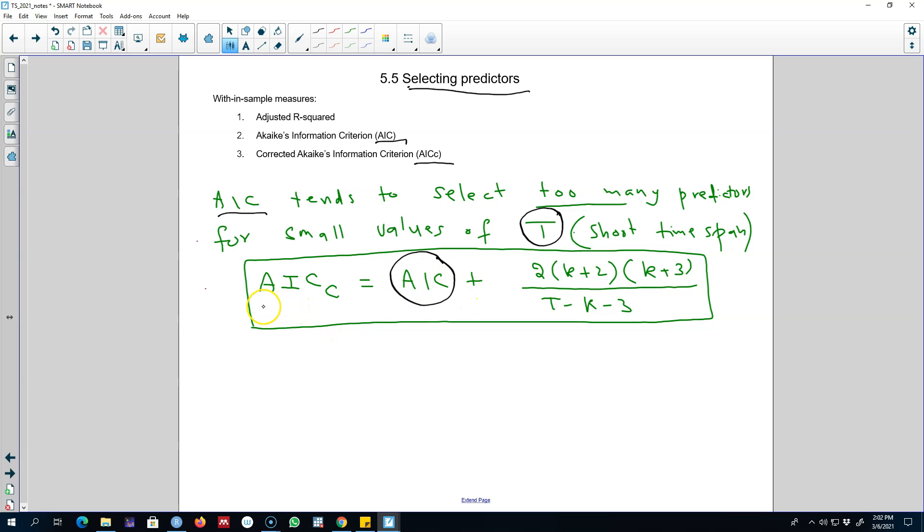So what we do here is we correct our AIC by using this adjustment, and we call the resulting criterion AIC corrected.